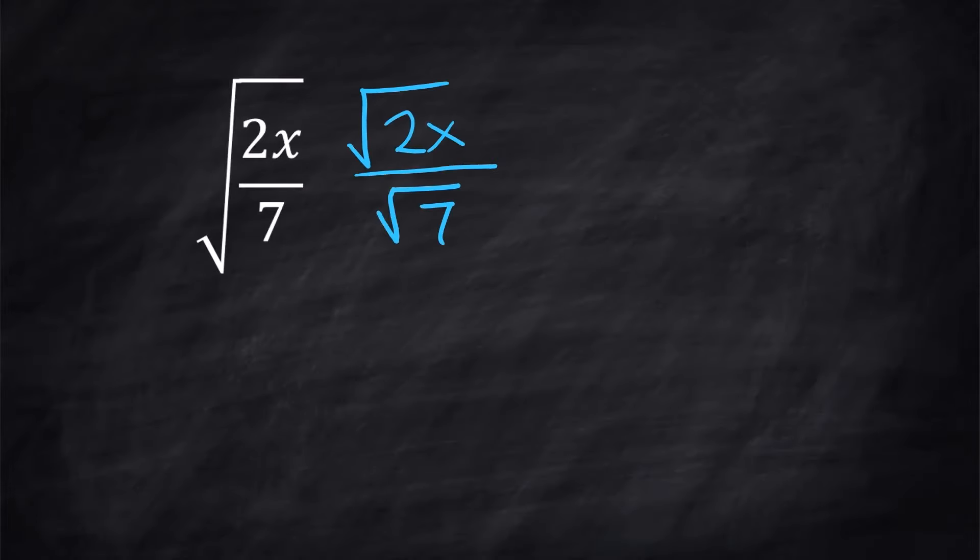Again, rewriting it so that you have the square root of the numerator over the square root of the denominator, because that's how you do the square root of a fraction. We are going to rationalize by taking the top and the bottom times the square root of 7, and we end up with the square root of 2x times 7 on the top,